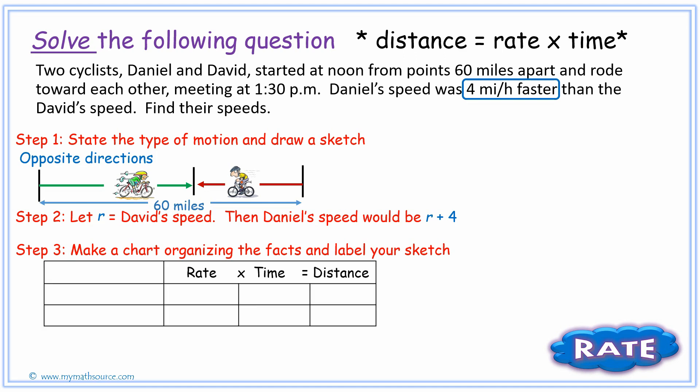With that, we can now create a chart organizing the facts and labeling our sketch. As we put our chart there, we simply put Daniel and David and see what their rate and time equivalent to their distance will be. Well, as we saw, David's speed is represented by r, and the time we can find because it said started at noon. If it started at noon and finishes at 1:30 pm, that would be about an hour and a half. Because we're using decimal time, we're going to write it as 1.5 because 30 minutes is out of 60 minutes and that's not in decimal form in the sense of writing it in terms of a decimal number.